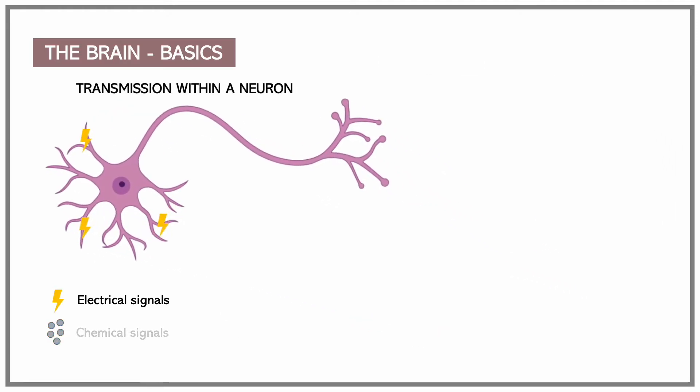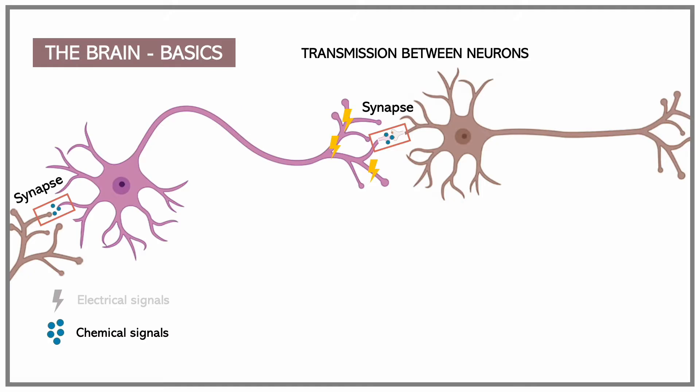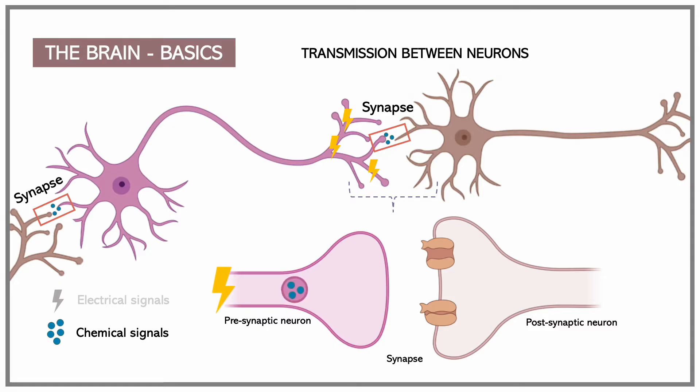Transmission within a neuron is electrical, and this is called an action potential. Transmission between neurons is chemical and occurs at tiny gaps called synapses. Once an action potential reaches the presynaptic neuron, neurotransmitters are released in the synapse and received by the postsynaptic neuron.